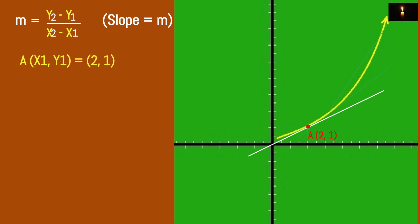In calculus, the tangent line and slope are related. On a general line, the tangent line is the slow-go shape. Here is the formula sheet: m equals y2 minus y1 divided by x2 minus x1. The coordinates for x1, y1 and x2, y2 are in the formula.